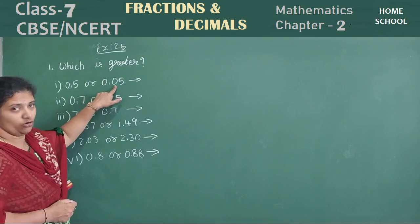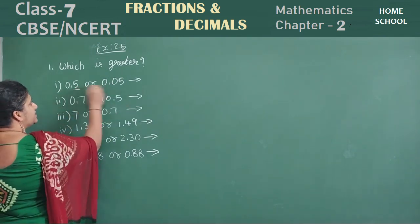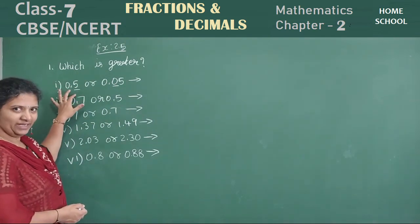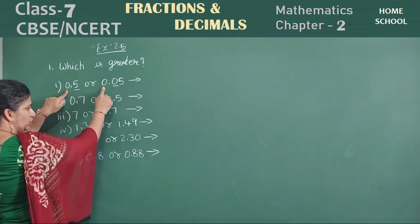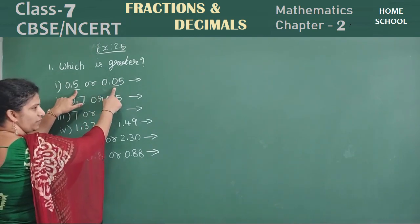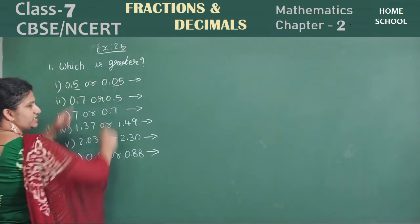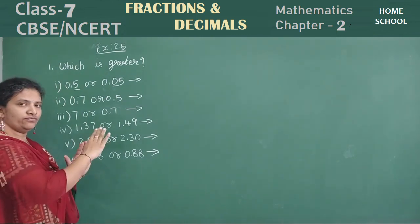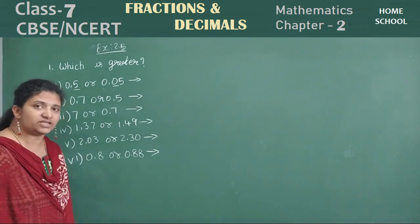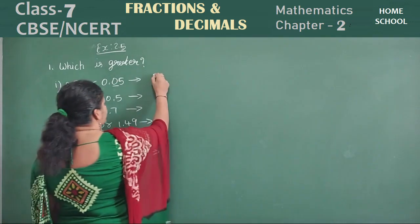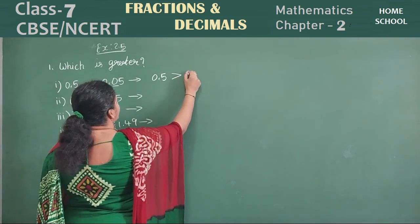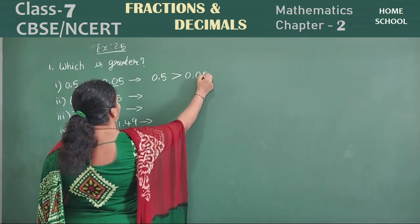After the point, what do you have? Zero. Zero is greater or five is greater? Children, compare here — five is greater or zero is greater? Five is greater, right? First, you try to compare these two. If you are unable to compare — if there are zeros or same values — then shift to the next value. Now compare five and zero: which is greater? Five is greater. No need to check other numbers — it's enough. We have already compared and got the answer. Zero point five is greater than zero point zero five.